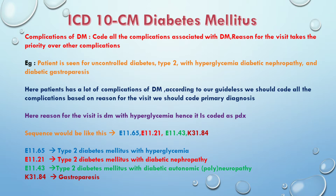According to our guidelines, we should code all the complications based on the reason for the visit as the primary diagnosis. We should code all the DM complications. Here, the reason for the visit is DM with hyperglycemia.